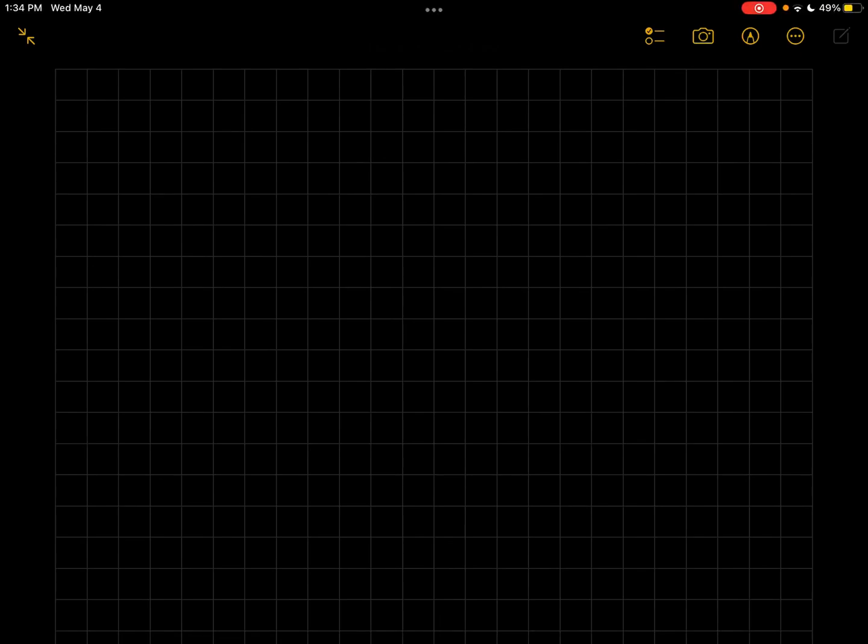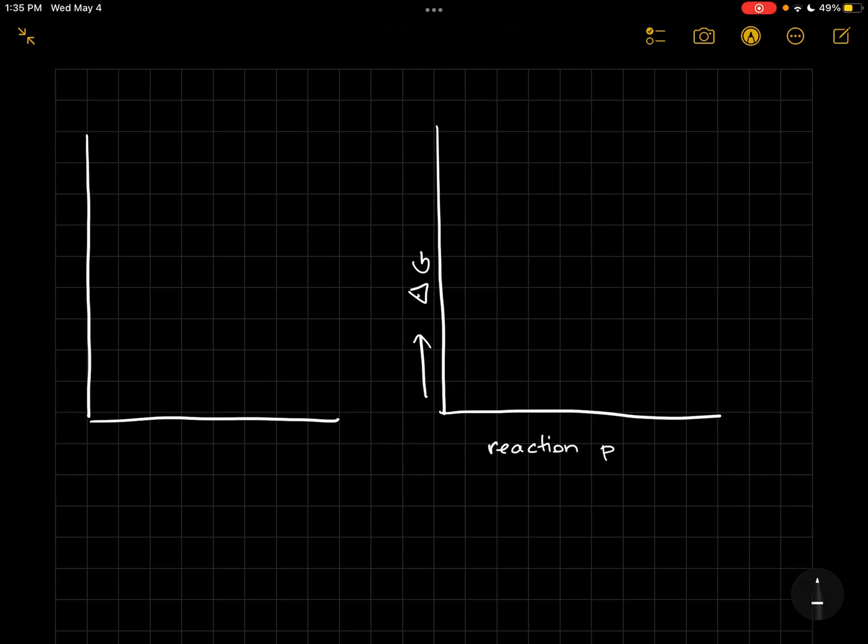I'm going to talk about exergonic versus endergonic reaction diagrams. So you may recall these diagrams where on one axis we have delta G and on the other axis we have reaction progress or time.